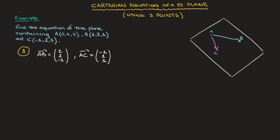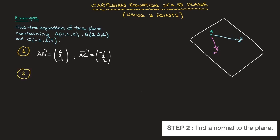Done. That's our first step done. We've now defined two non-collinear vectors that are contained in the plane. Step 2: we need to find a normal to the plane. To obtain a normal to the plane, all we have to do is calculate the cross product of any two non-collinear vectors that are contained in the plane.